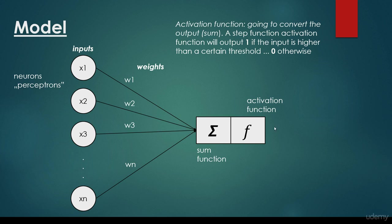Then we have the activation function that's going to convert the output — the value of the sum function. Usually there are several activation functions: the step function, the sigmoid function, the hyperbolic function. For perceptrons we usually use a step function, and this step function will output 1 if the input is higher than a certain threshold, and 0 otherwise.